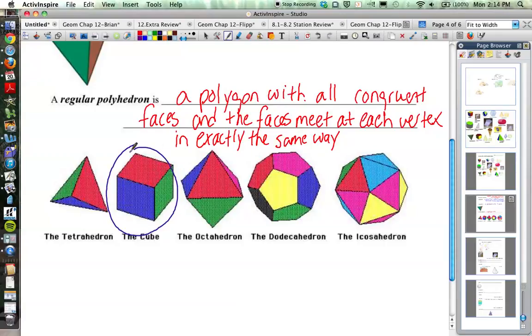And all the faces of this octahedron here are back to congruent triangles again. But there's eight of those. Octa means eight. So there's actually eight of those triangles that enclose that space. The dodecahedron, there are 12, 12 regular pentagons here that enclose the space. And that icosahedron, where there are 20.